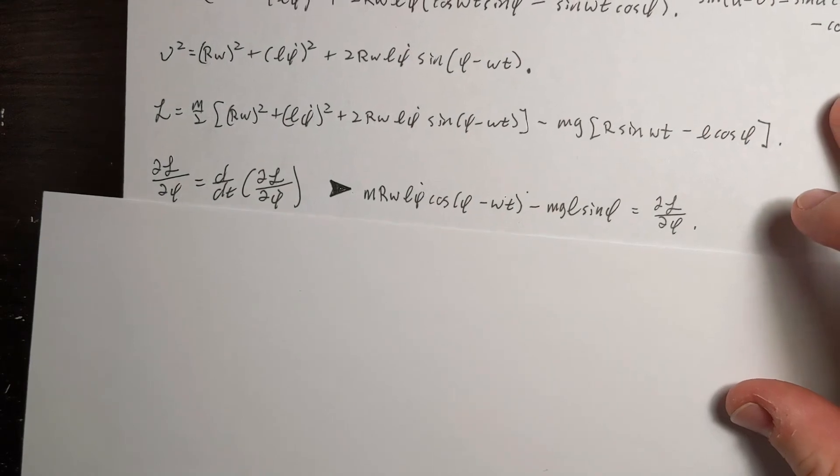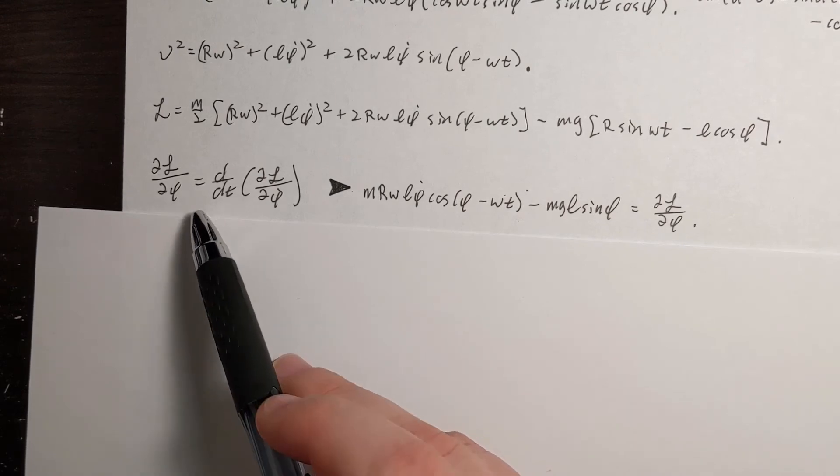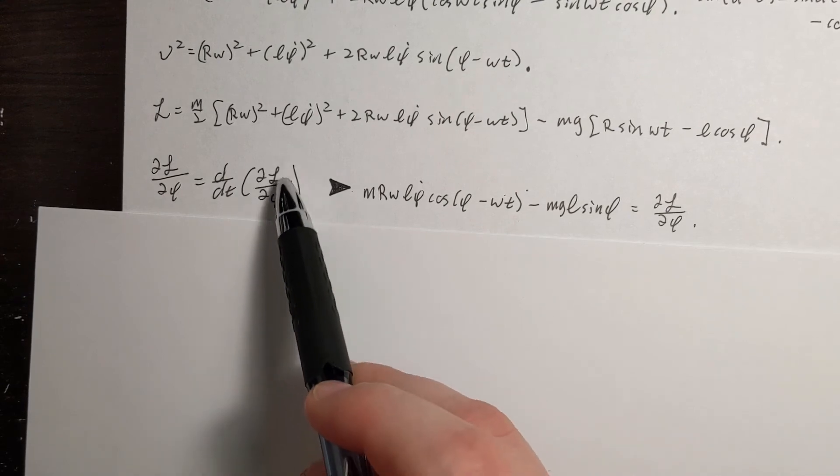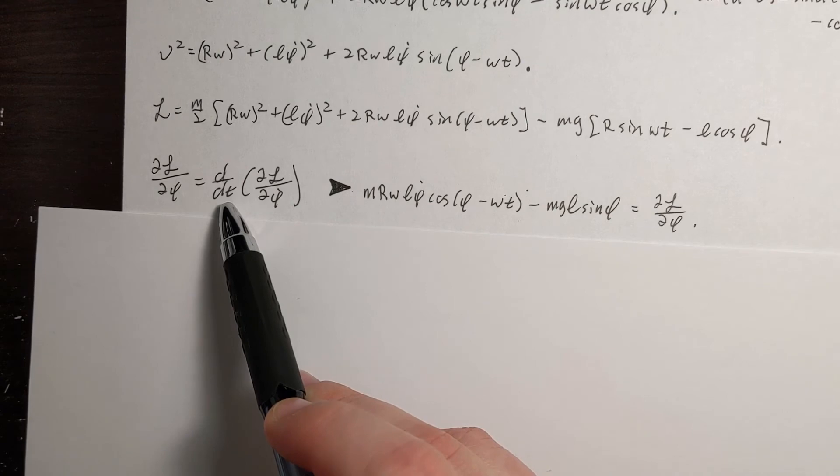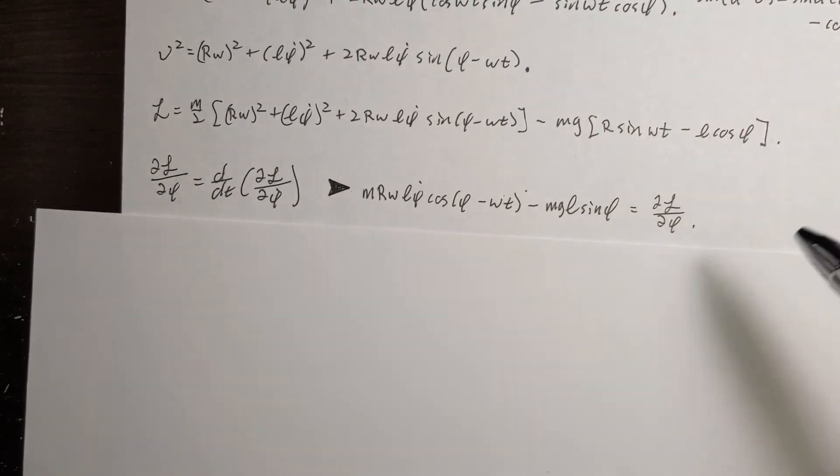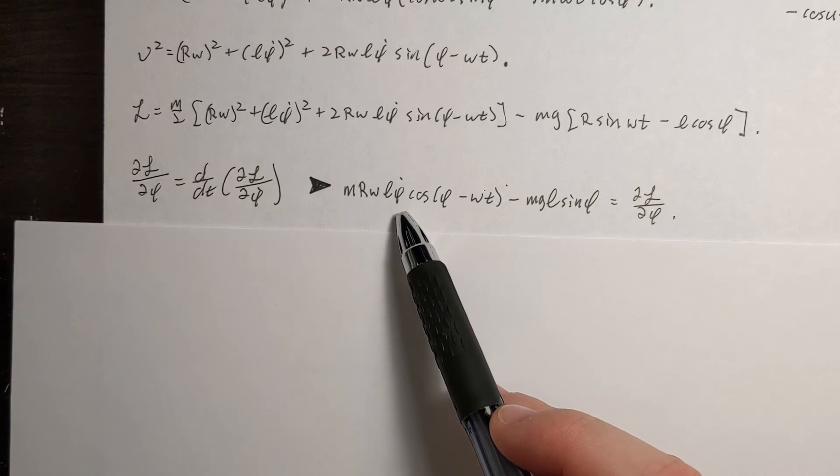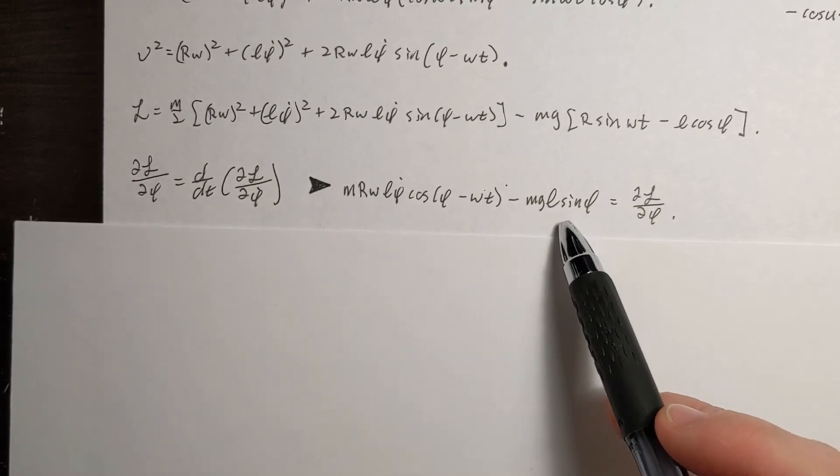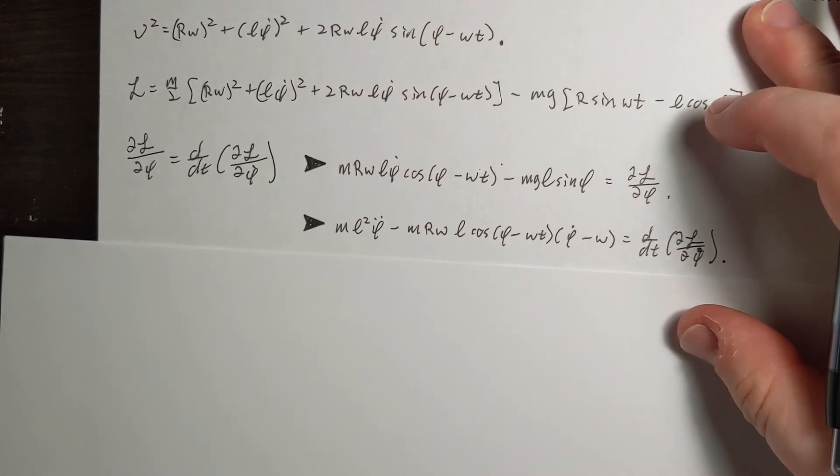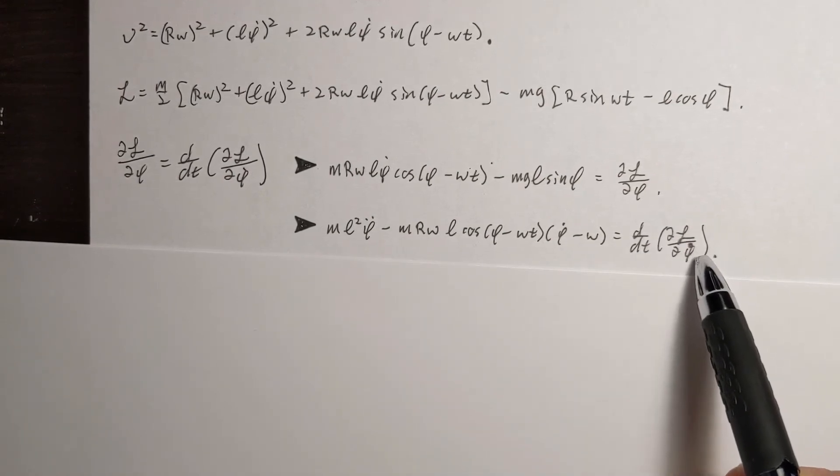Now moving to the Euler-Lagrange equations, I see that the derivative of the Lagrangian with respect to phi, which is going to be a force, is equal to the time derivative of my Lagrangian, of the derivative of the Lagrangian with respect to phi dot. So this is a momentum times the time derivative really is going to give me a force. So this is completely equivalent to Newton. So doing that real quick, we will see MR omega L phi dot cosine phi minus omega t minus MgL sine phi is simply equal to the force. And of course we have to equate it with another force.